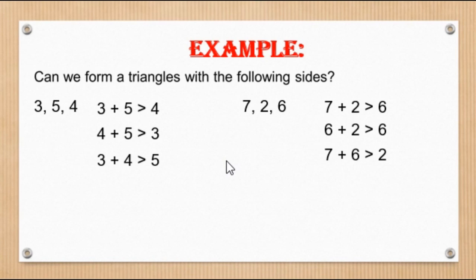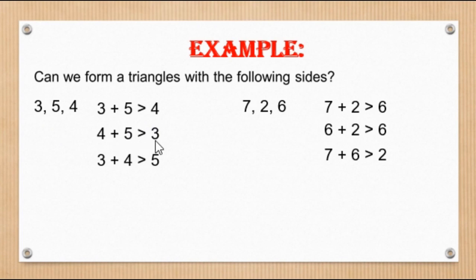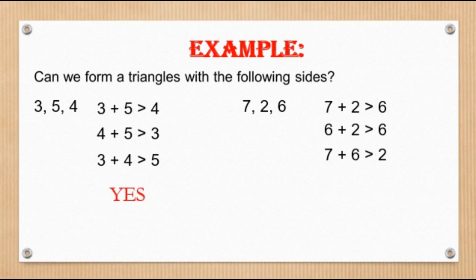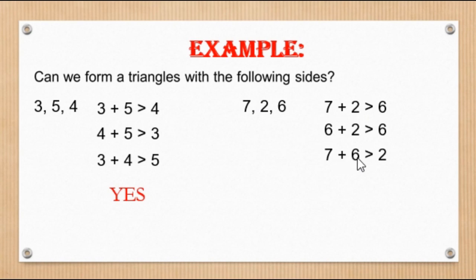Another example: can we form a triangle with the following sides? Example 1 — sides 3, 5, and 4. Check: 3+5=8 is greater than 4; 4+5=9 is greater than 3; 3+4=7 is greater than 5. All correct, so yes, a triangle can be formed. Example 2 — sides 7, 2, and 6: 7+2=9 is greater than 6; 6+2=8 is greater than 6; 7+6=13 is greater than 2. All correct, so the answer is also yes.